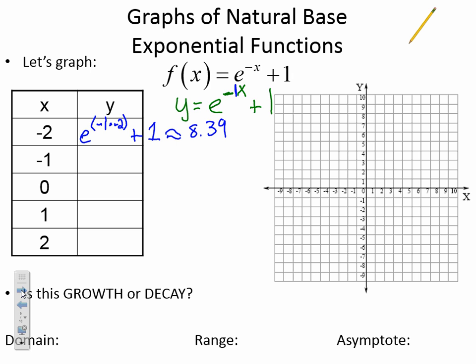Do the same thing here. I'm going to have e to the negative 1 times negative 1 plus 1, and I get approximately 3.72. Same thing with 0, e to the negative 1 times 0 plus 1. So I'm going to get approximately 2 here. I have e to the negative 1 times 1 plus 1, approximately 1.37. And last but not least, I have e to the negative 1 times 2 plus 1, approximately 1.14.